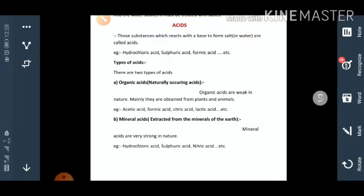Some types of acids - mainly there are two types of acids: organic acids and mineral acids. All the organic acids are mainly naturally occurring acids and they are very weak in nature.